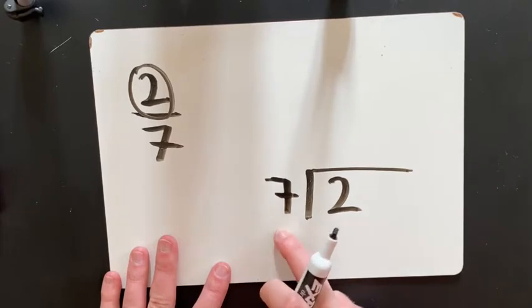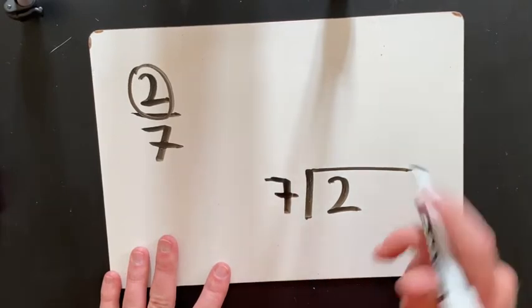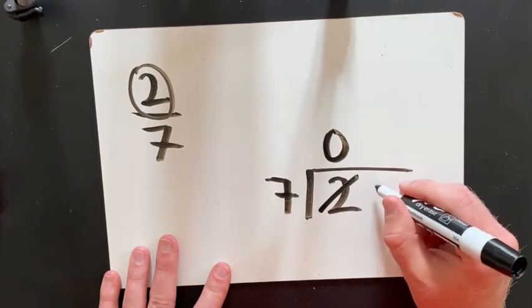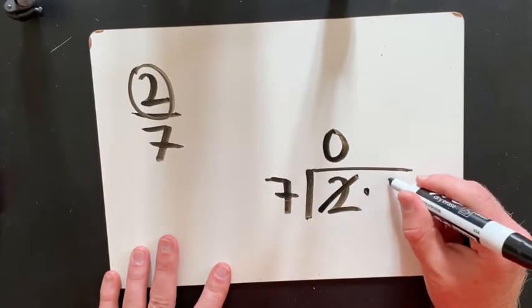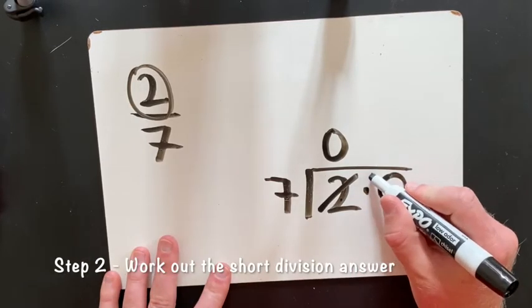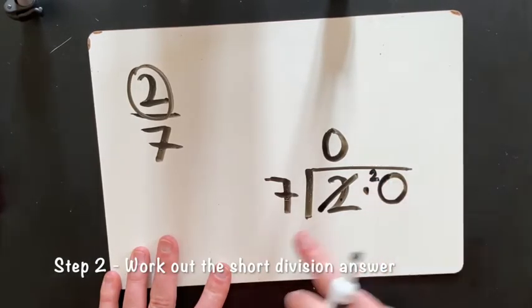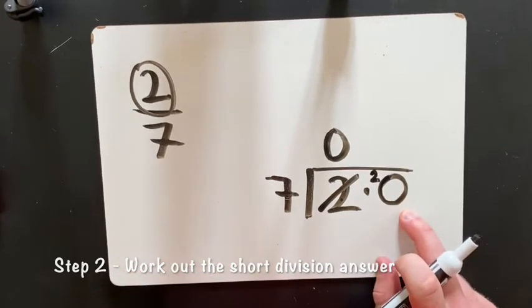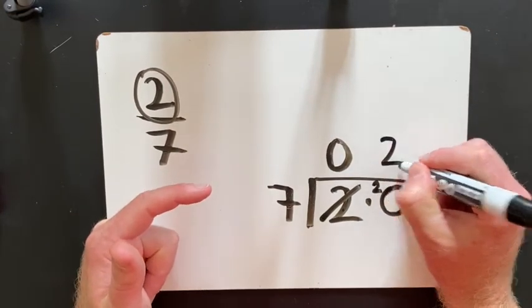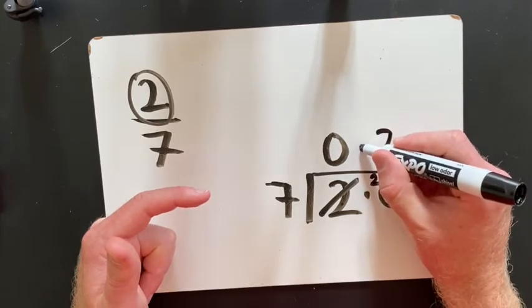How many 7s in 2? Well, there are 0. So then you would put a decimal point and a 0, and then you need to carry the 2. How many 7s in 20? 7, 14. There are 2. Don't forget to put my decimal point up here as well.